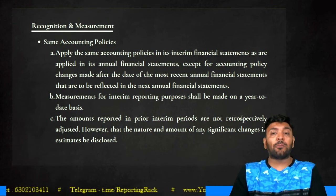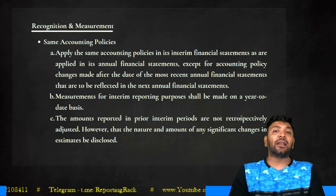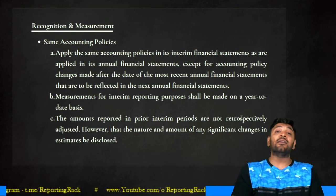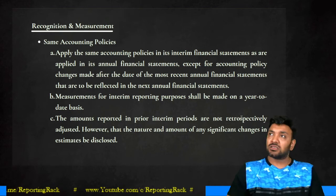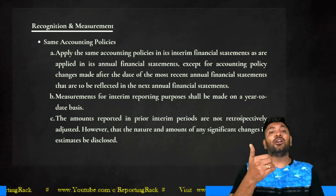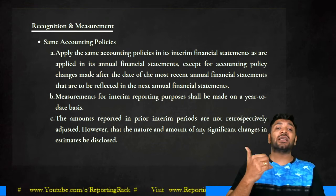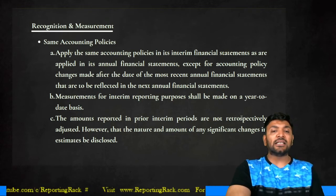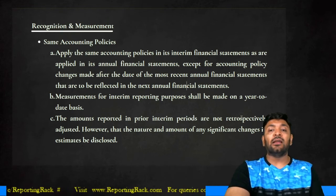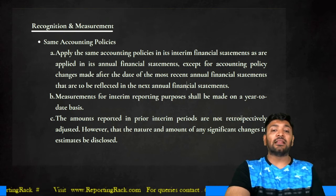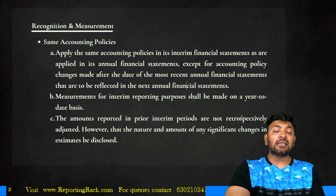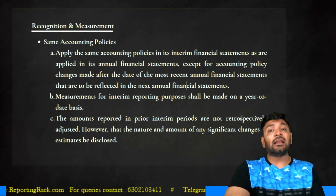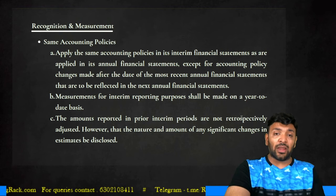The same accounting policies adopted in annual financial statements should be used in interim financial statements, except when there has been a change in accounting policy from the most recent annual financial statements. If a policy change occurs during the year, it must be reflected in the interim period. Measurement for the interim period should always be on a year-to-date basis, and amounts reported in previous interim periods are not retrospectively adjusted — however, the nature and amount of significant changes must be disclosed.